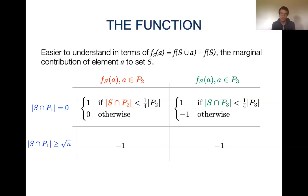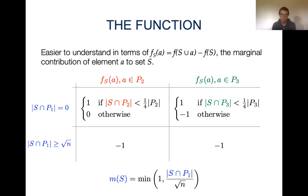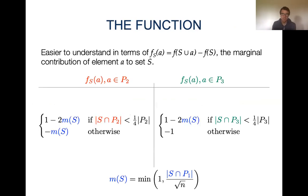I described the cases where we have either zero or a large number of elements from P1. In general, we use a masking function to handle the general case. This masking function has value 0 if we have zero elements from P1, and value 1 if we have at least square root of n elements from P1, interpolating between these two cases. Using this masking function, we get the marginal contributions for elements in P2 and P3, recovering the previously described cases at the extremes.